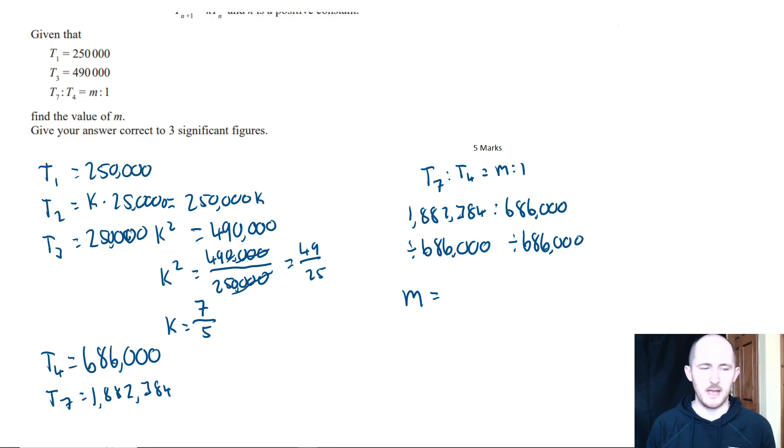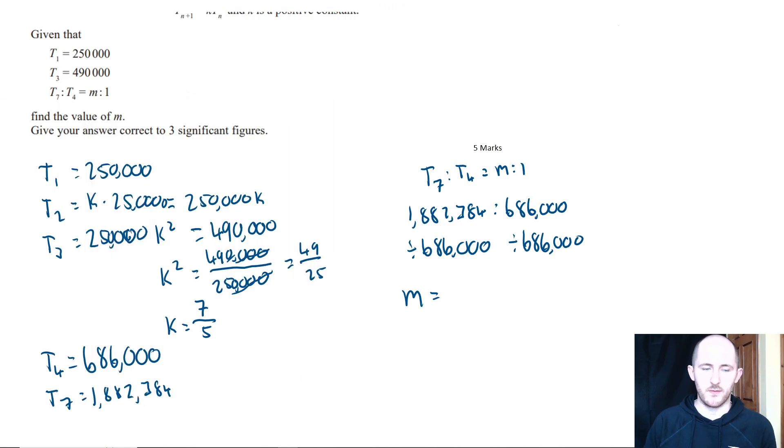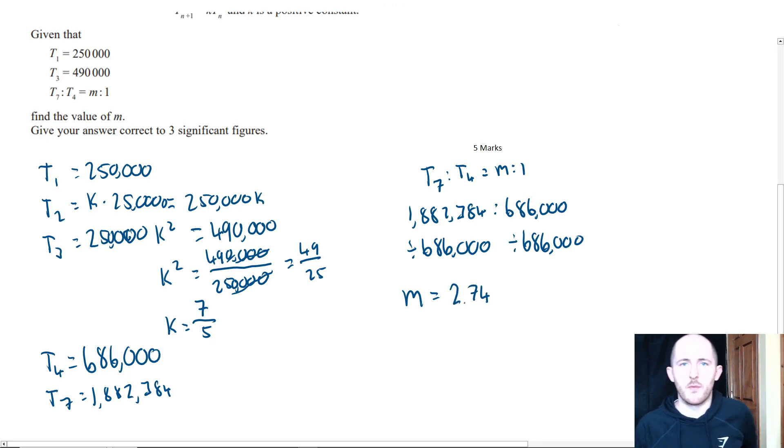That's going to be what our value of m is. So we're going to take this value, divide it by 686,123, and it says give your answer to three significant figures, so that's 2.74. And that's the answer.